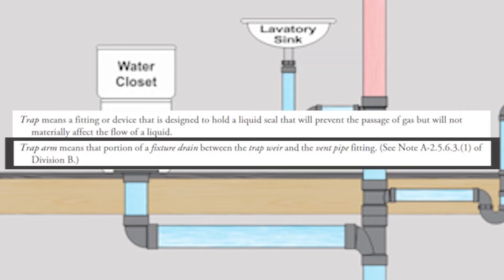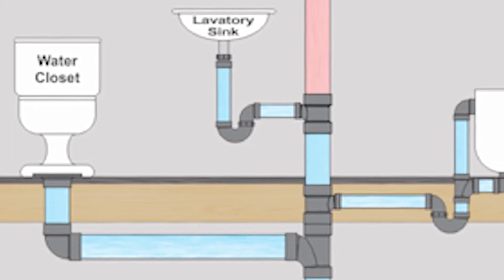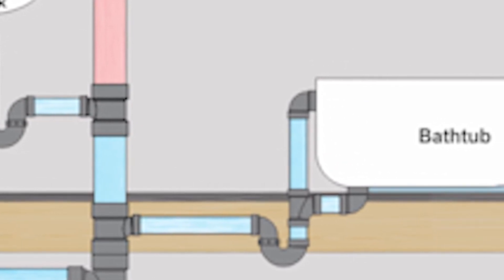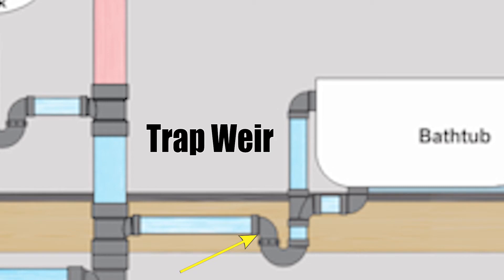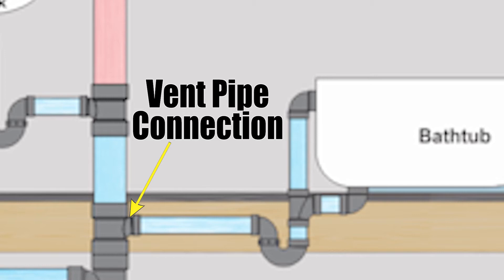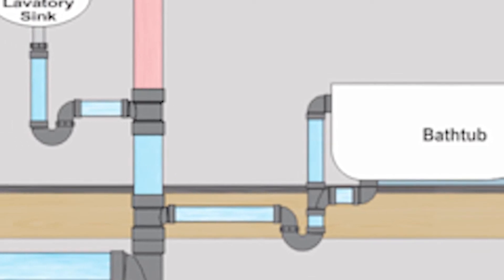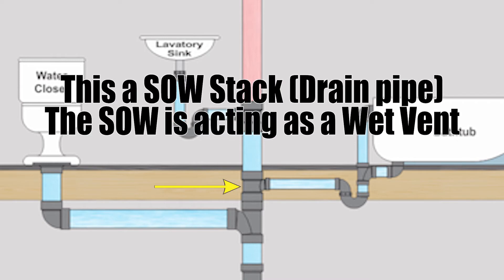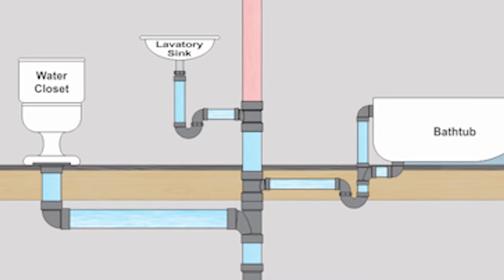The code defines it like this: trap arm means that portion of a fixture drain between the trap weir and the vent pipe fitting. The trap weir is this part of the trap right here, and the vent pipe connection is this tee right here that connects into the soil or waste stack. If you're looking at the toilet and the bathtub, they join into the drain rather than the vent — that's because it's wet vented at that point. Wet venting will be its own video series because it's very involved, so don't worry about that yet.